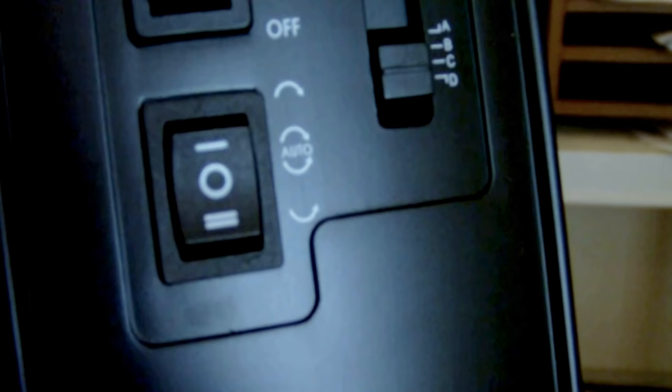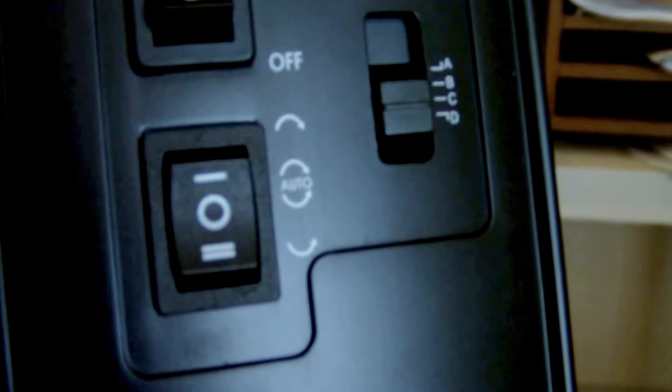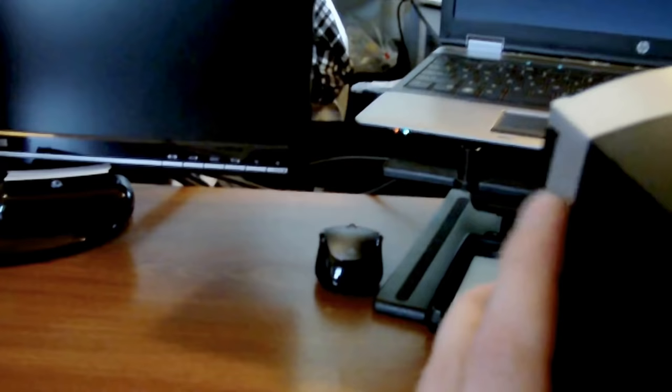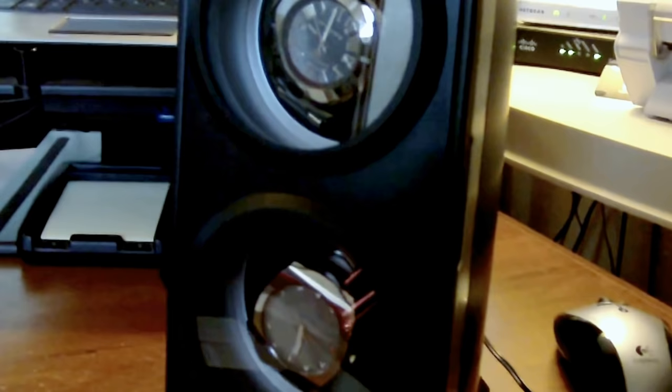As you can see, it's got the on-off switch towards the top there. I believe the bottom left switch there is going to be the counterclockwise and the clockwise options. And then over to the right I believe is the four different settings as far as the timing that's involved with how many rotations, etc. So pretty minimal. It's got a nice power AC adapter as you can see there, nothing too out of the ordinary for a watch winder.